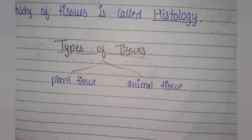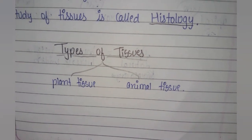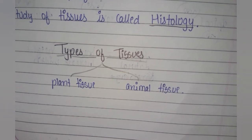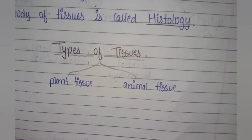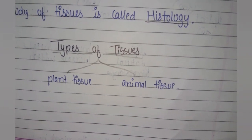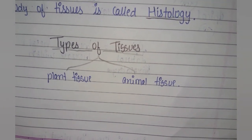In this chapter we will learn in depth about both plant tissue and animal tissue.